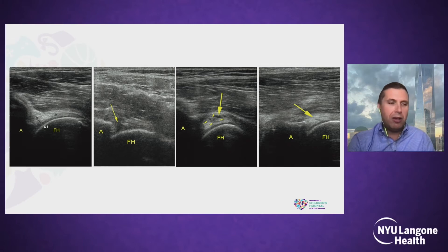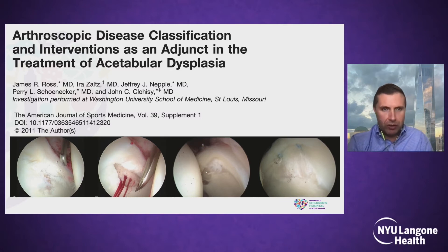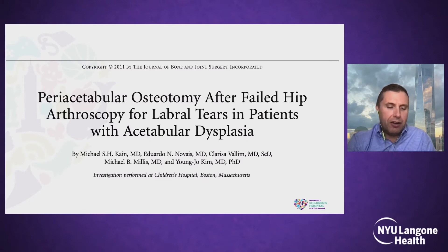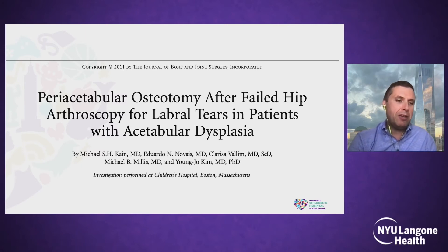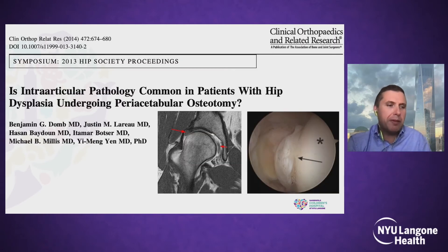Ultimately, looking inside the joint is the best way to define labral pathology, and the Anchor Group were crucial in showing us this with an arthroscopic classification of labral pathology. You could make the argument that doing an isolated arthroscopic repair doesn't compromise outcomes, but that's probably not true. This paper from Boston evaluated patients who underwent a PAO after failed arthroscopy and showed that results were not as good when patients had a previous arthroscopy. So there might be something more to this.